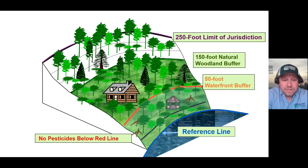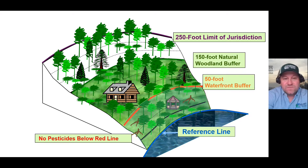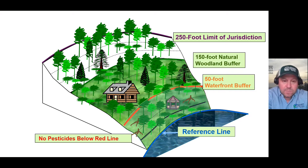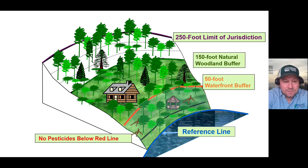Returning to the illustration as it applies to pesticides: we have our reference line, the 250-foot limit of jurisdiction, and everything in between. Within the 50-foot waterfront buffer, you may not have any pesticides — that restriction applies below the red line.